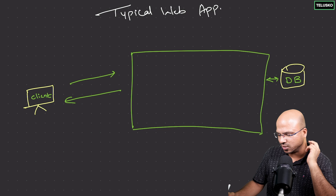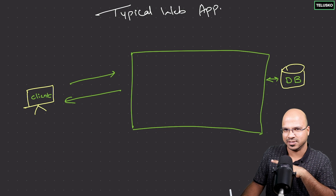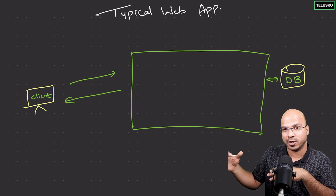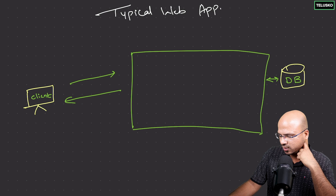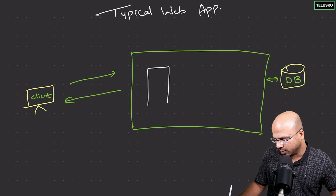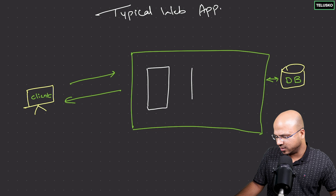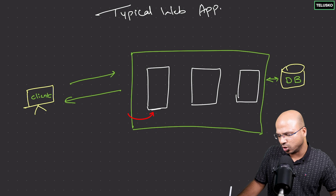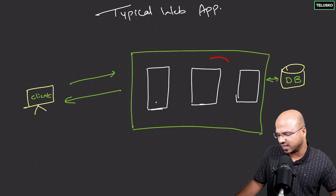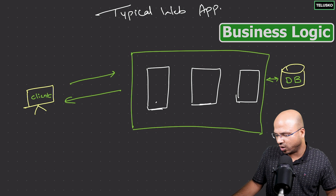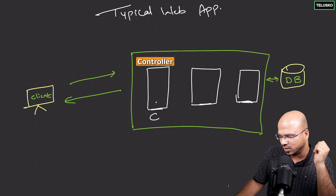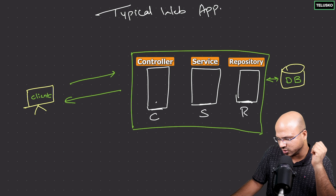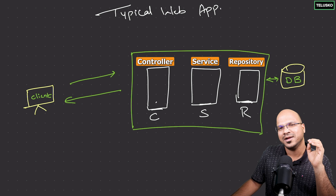A typical Spring application — how it will look. We normally create multiple layers. We have a layer here — this will be a class in Java — and then one more layer, and one more layer. The role of this first layer is to accept the client request. The role of the second layer is to do any business logic. And the role of the third layer is to connect with the database. Typically, they are called controllers, services, and repositories.